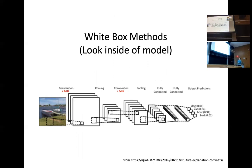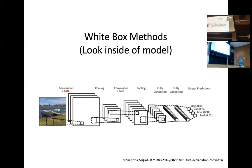The first set of methods we're going to talk about are white box methods, where we have access to the internals of the model — we can look at any of the weights, run gradient calculations, do whatever we want to understand what's happening. The first method is looking at convolutional filters. Here we have a standard convolutional neural network: an input image is run through a series of convolutional layers, then pooling layers, then further convolutional layers, joined into a fully connected layer, and finally outputting a probability distribution over possible classes.